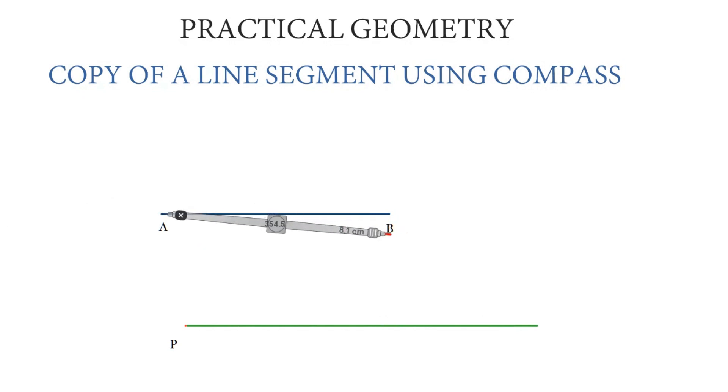Now measure the length of AB with the help of a compass. Place the needle on one of its points and take the exact measurement of the line segment.